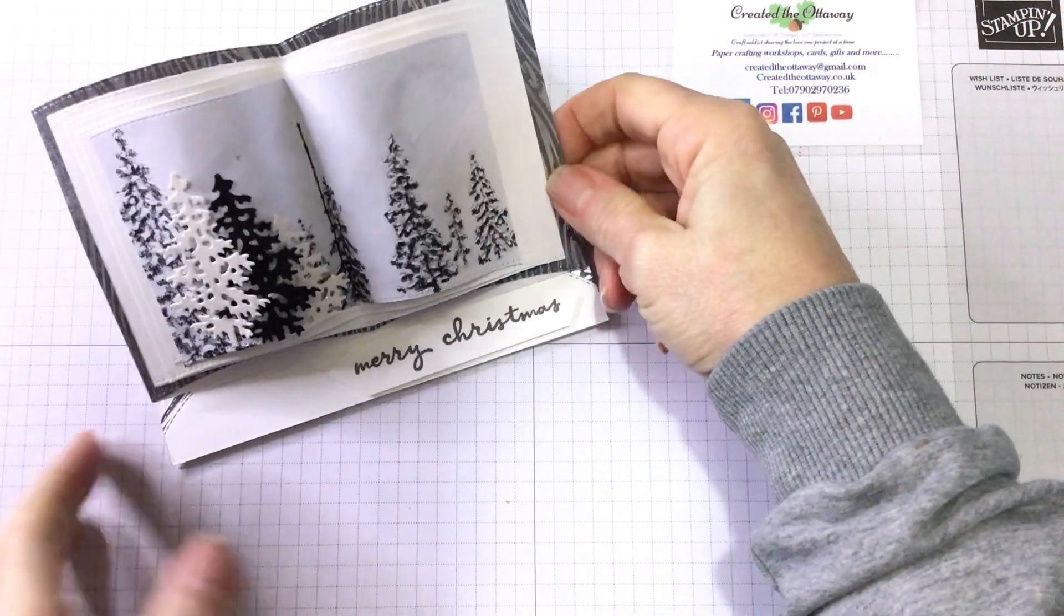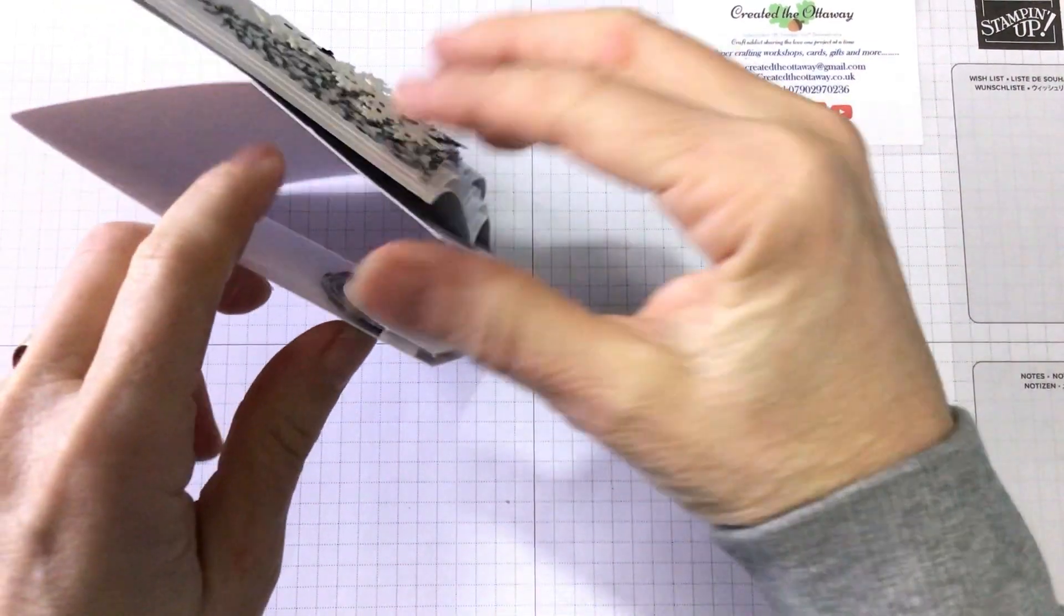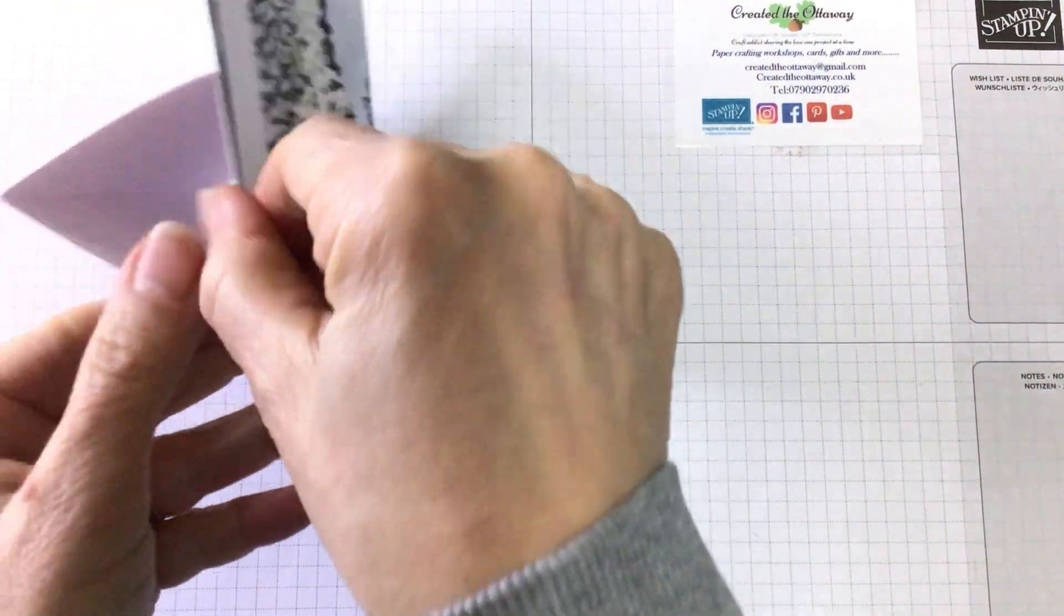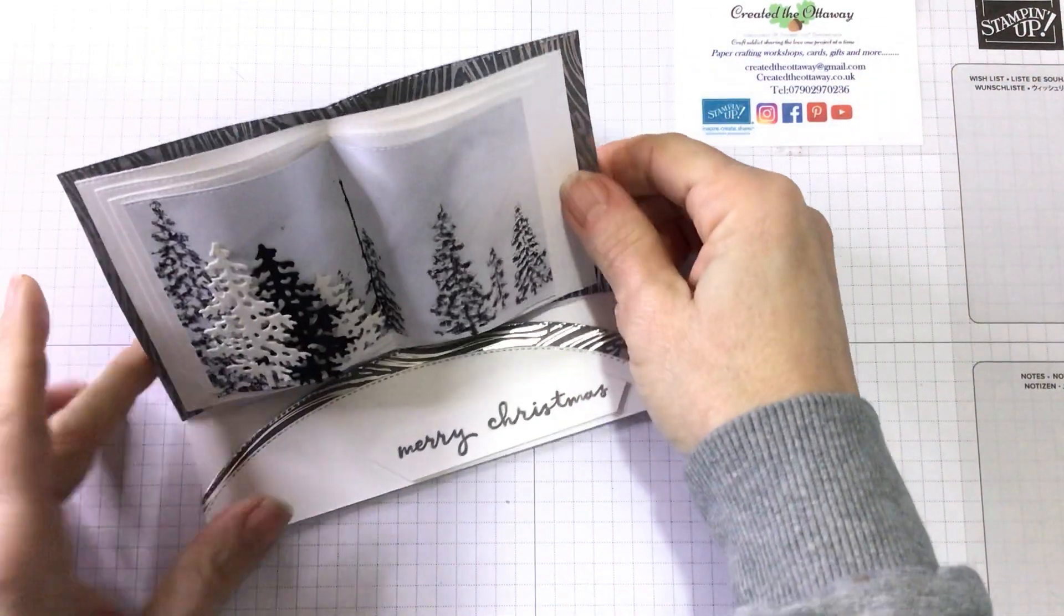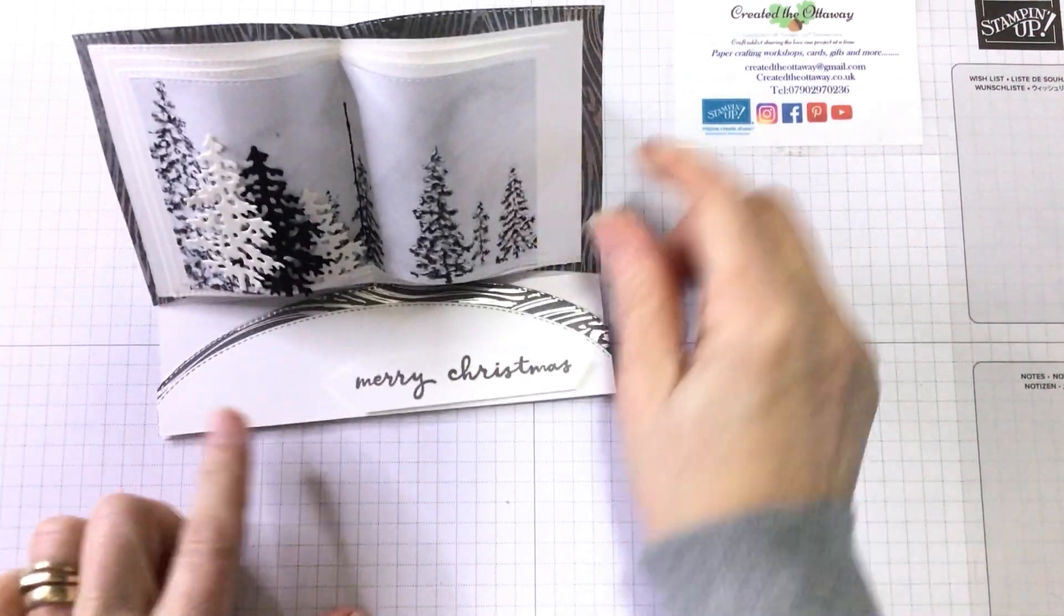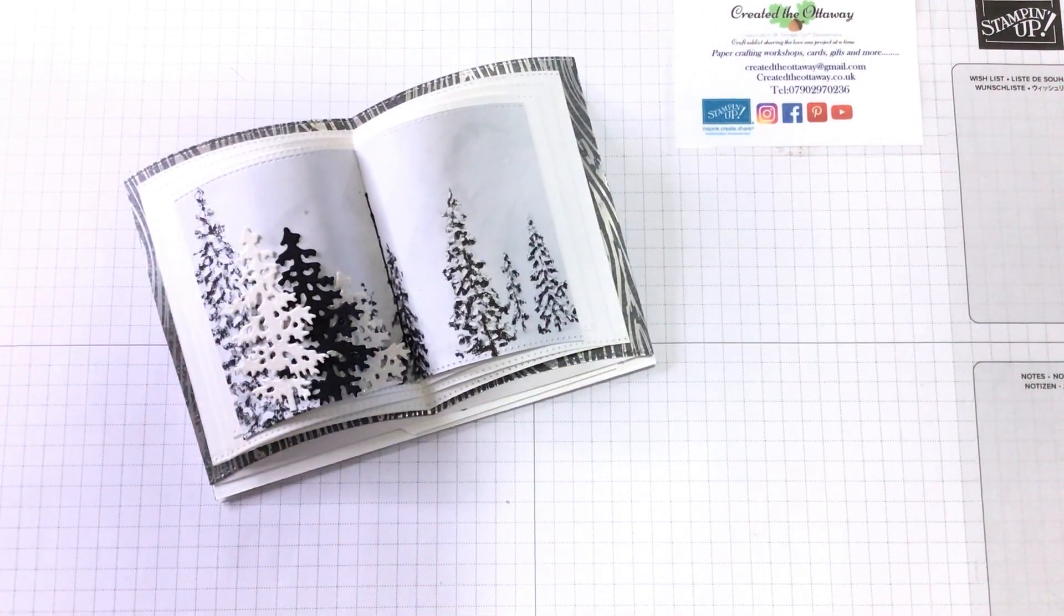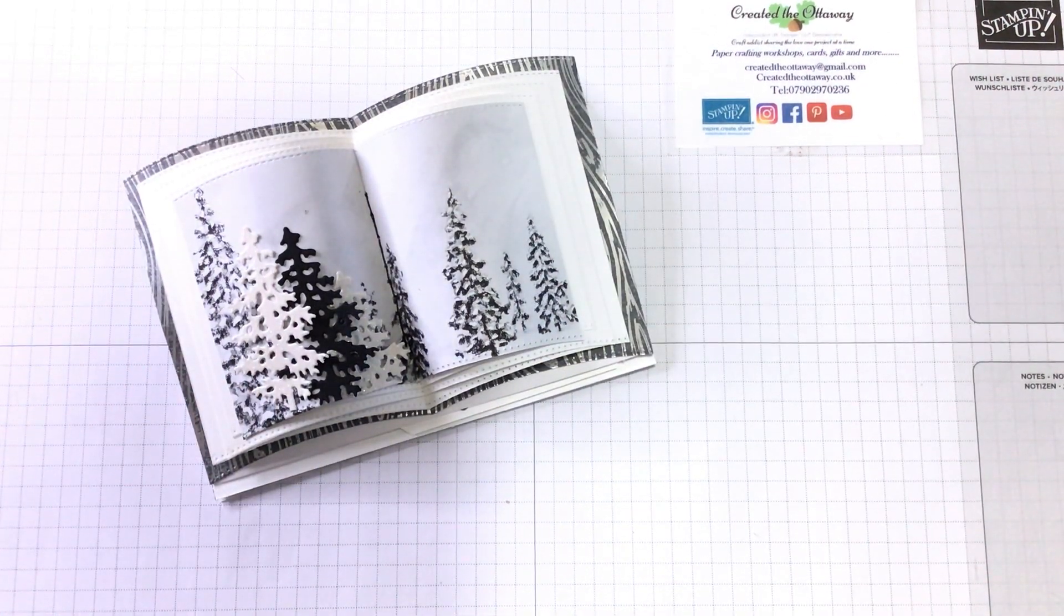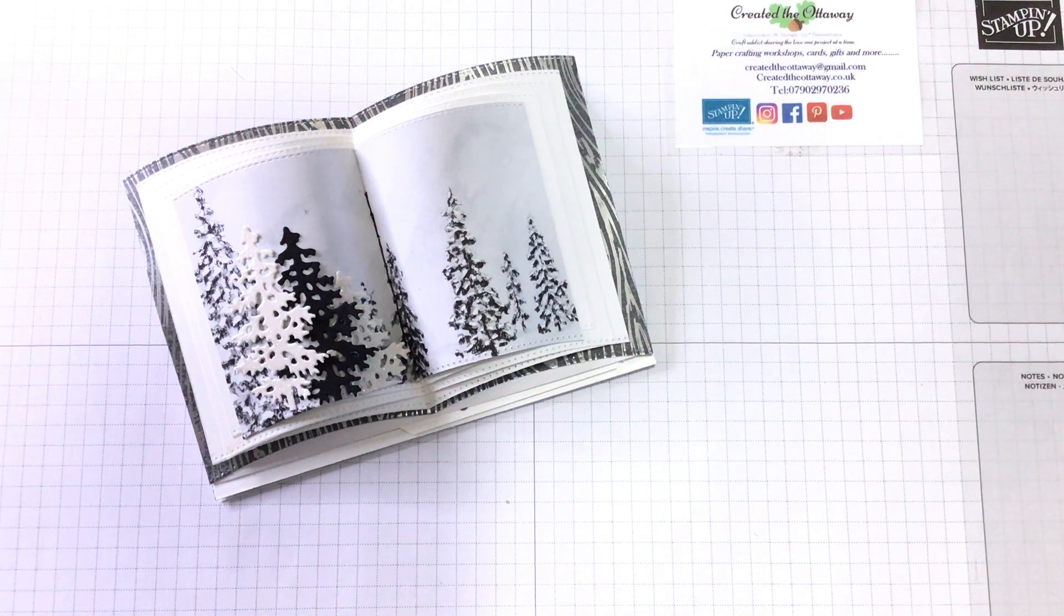So this is it. It's basically an easel card. It's an easel card when you look at it sideways. But the back section is made to look like a book and it's just propped up with this front piece here. So you could use it for lots of different occasions. I have decided to make a Christmas version and the paper that I'm using is Peaceful Places.